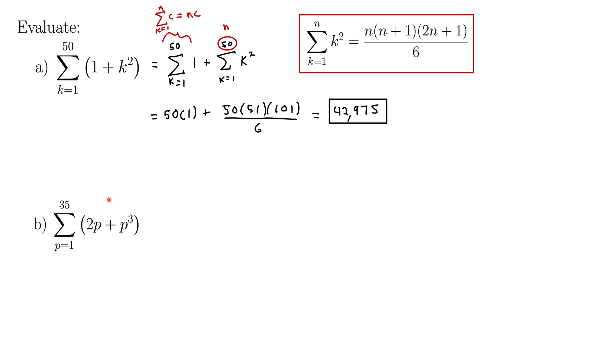Well let's start by breaking this up into two different sums. And in this first sum, this 2 will pop out to the front, because that's our constant rule for Riemann sums. So we can rewrite this as 2 times the sum as p goes from 1 to 35 of p plus the sum of p cubed. Of course, this p goes from 1 to 35.